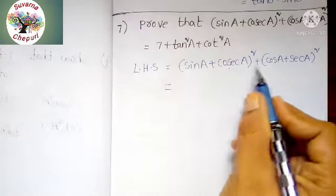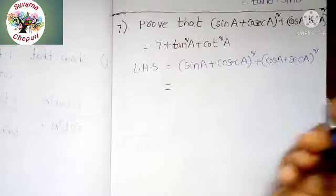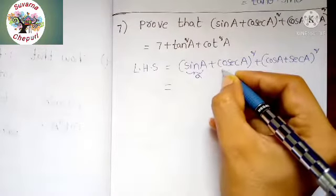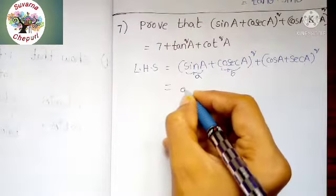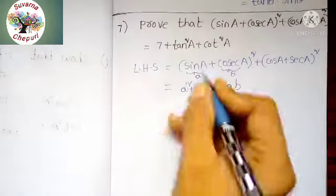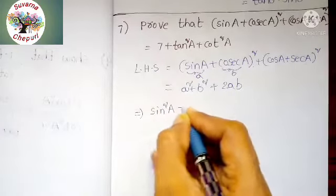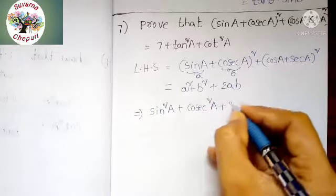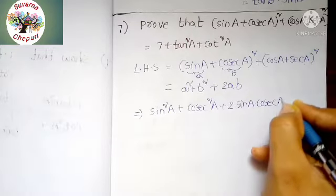It is in the form of A plus B whole squared. A means sin A, B means cosecant A. So A squared plus B squared plus 2AB. Applying this formula: sin squared A plus cosecant squared A plus 2 into sin A into cosecant A.